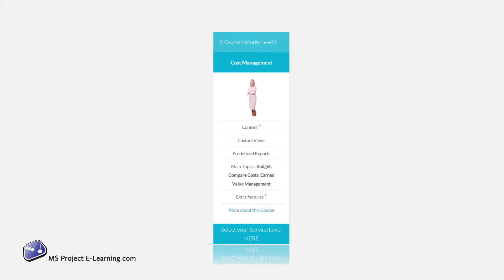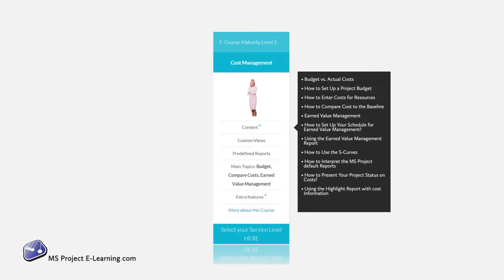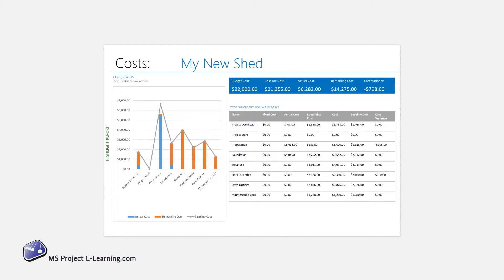In Maturity Level 5, you will incorporate costs in your schedule. So now also the financial governance for your project is covered in your highlight report. In the end, you will be able to report the project costs and earned value by applying rates for resources and costs of goods and services.